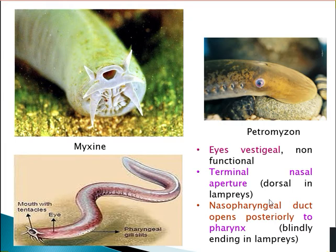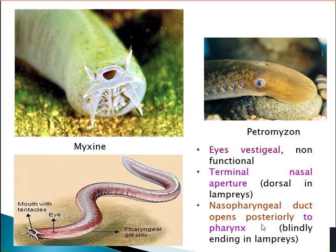Regarding the nasopharyngeal duct: in Hagfishes the nostril is connected to the pharynx by a nasopharyngeal duct which opens posteriorly into the pharynx, whereas in Lampreys the nasopharyngeal duct ends blindly.